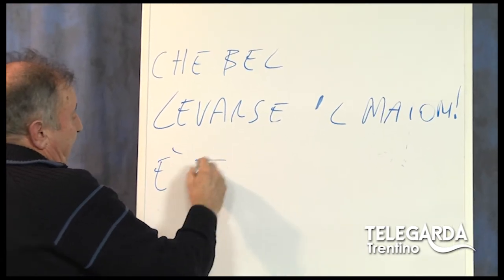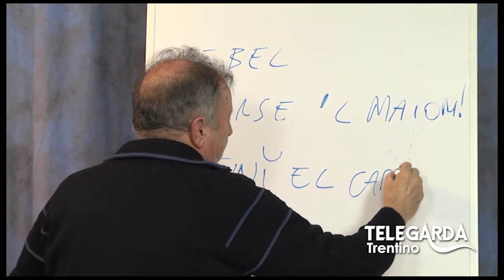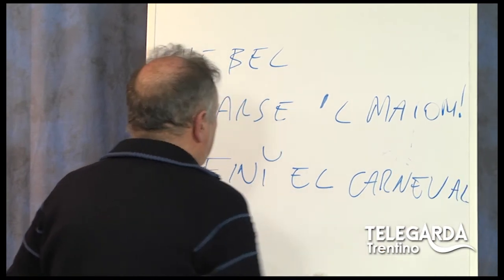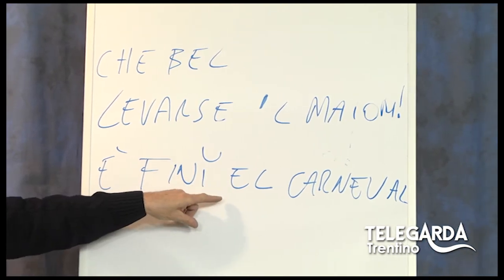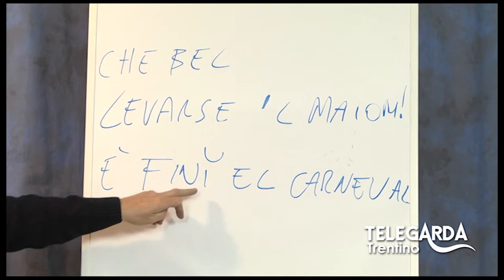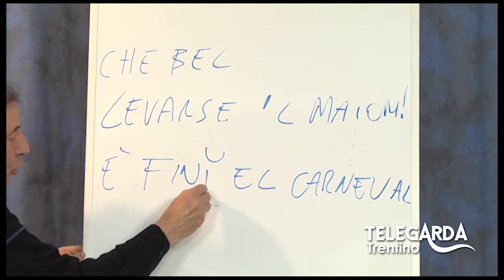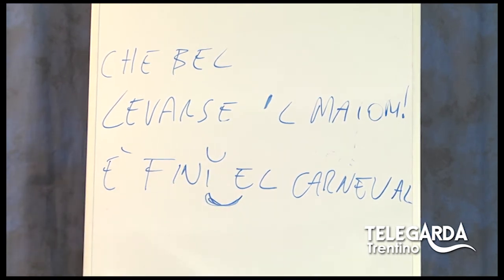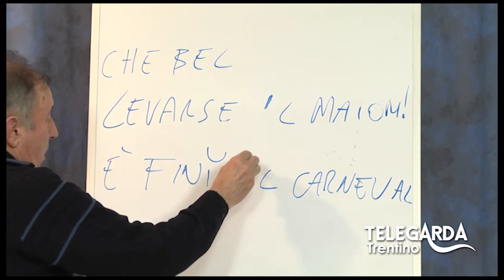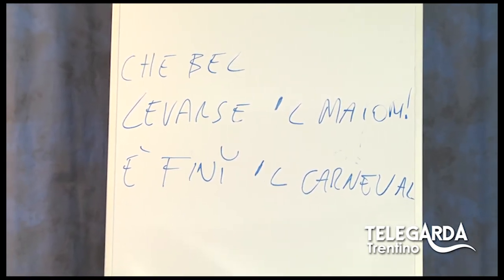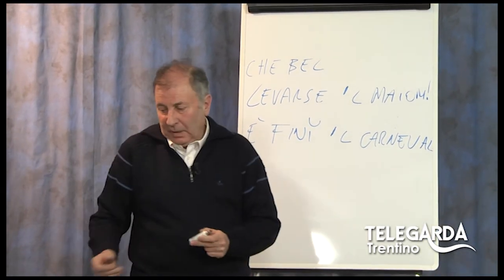Altro esempio: "È fini el carneval." Anche qui abbiamo due parole che si confrontano — una vocale qua, un'altra vocale qua. In questo caso una I e una E: c'è lo scontro di due vocali. Automaticamente questa vocale sparisce. Quindi non dico "è fini el carneval" ma "è fini 'l carneval".